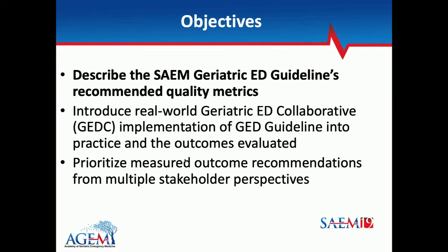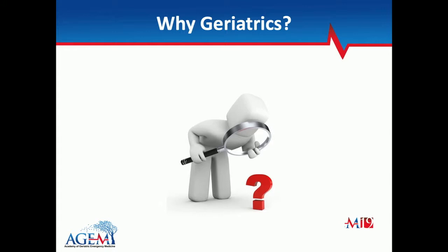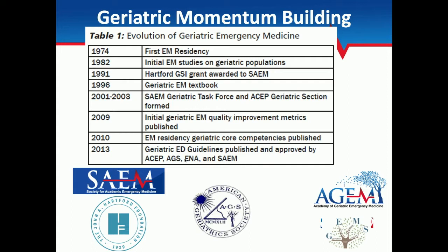Why geriatrics? We've got 10,000 baby boomers turning 65 every day, and we haven't even seen the peak of that generation entering their geriatric years. All of us working in adult EDs see increasing volumes of these patients every day — they stay longer, consume more resources, and come back more frequently because they're really difficult to manage and diagnose. The geriatric academy has built up a knowledge base, culminating in the publication of guidelines back in 2013, largely based on consensus but also on the best available evidence.